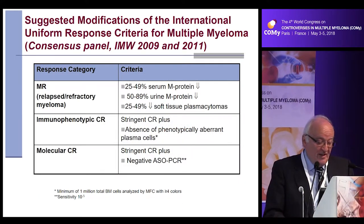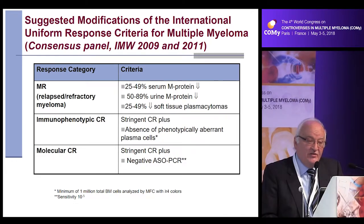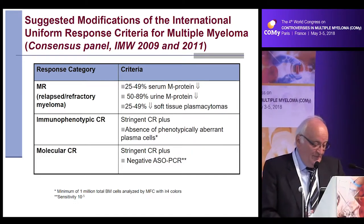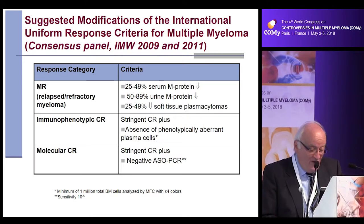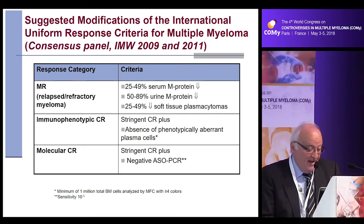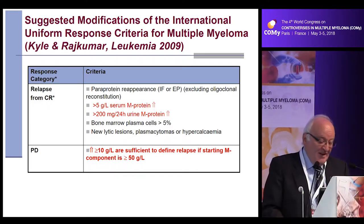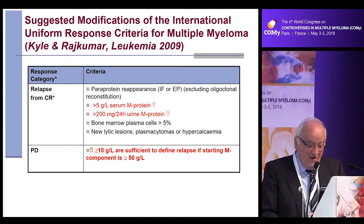There are some suggested modifications: reincorporation of minimal response, particularly in patients with relapsed/refractory disease and in clinical trials to detect signals of response to novel drugs or new combinations. Also, the immunophenotypic complete remission — stringent CR plus absence of phenotypically aberrant plasma cells — and the molecular CR — stringent CR plus negative molecular studies. Also, in patients with more than 50 grams per liter of M-protein, an increase of 10 grams per liter is enough to define progression.